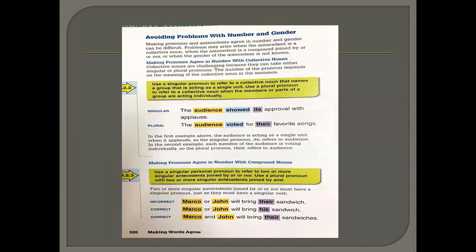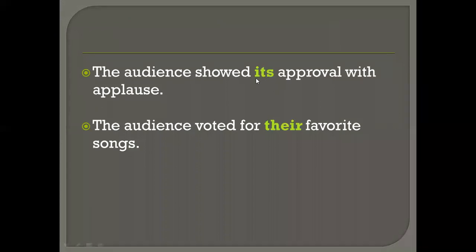Now, avoiding problems with number and gender. The biggest problem we face is with number and gender, especially with collective nouns. For example: 'The audience showed its approval with applause.' A collective noun can function both as a unit or as individual members of that group. When it's working as a unit, it will be singular. Here, the entire audience — all the members — are doing the same thing, and there's one single outcome.